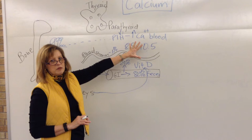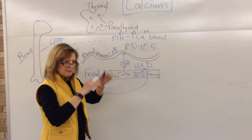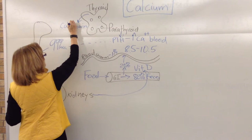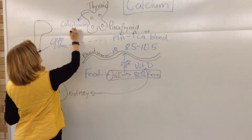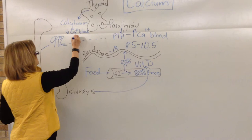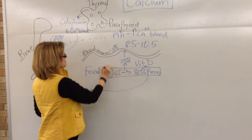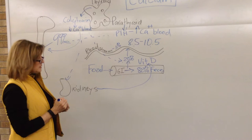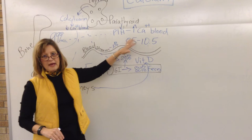When calcium gets too high, the thyroid releases calcitonin, which works to decrease calcium in the blood. Calcitonin reverses the process — it causes calcium to return to bone, decreases absorption, and communicates with the kidneys to excrete a little more. This brings calcium levels back down into the normal range. That is how calcium balance is maintained.